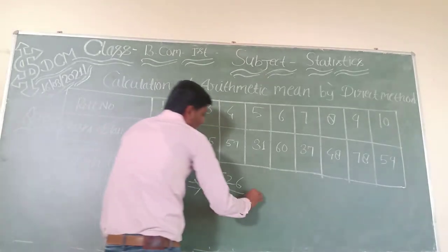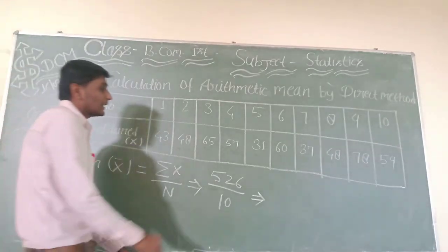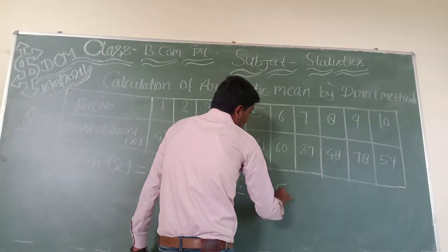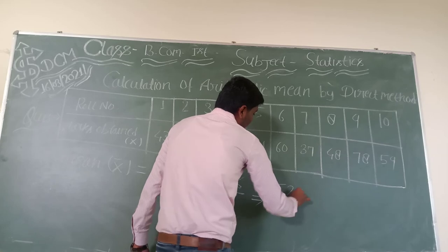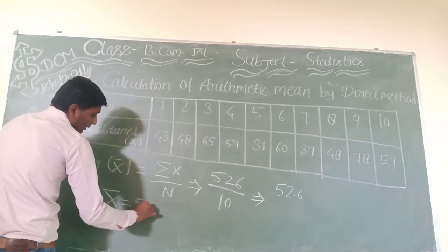So we get 526 divided by 10, which equals 52.6. Therefore, X bar equals 52.6.